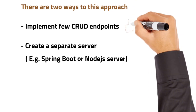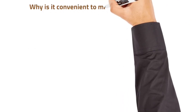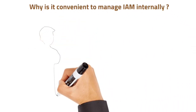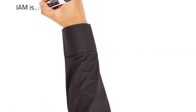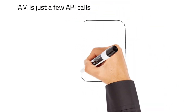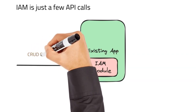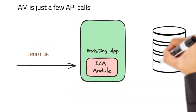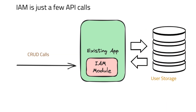The first method is more convenient and popular out of both. It is justifiable that it is convenient to manage identity and access in their own way. The first reason is that identity and access management can be done using a few API calls — by creating a few CRUD API endpoints, user management and authentication can be done easily with the support of a database table as the user storage.